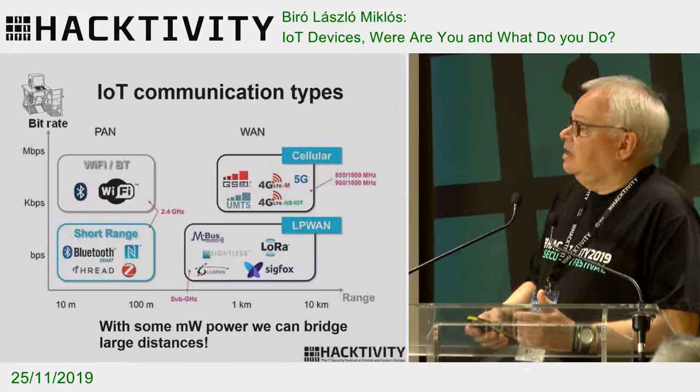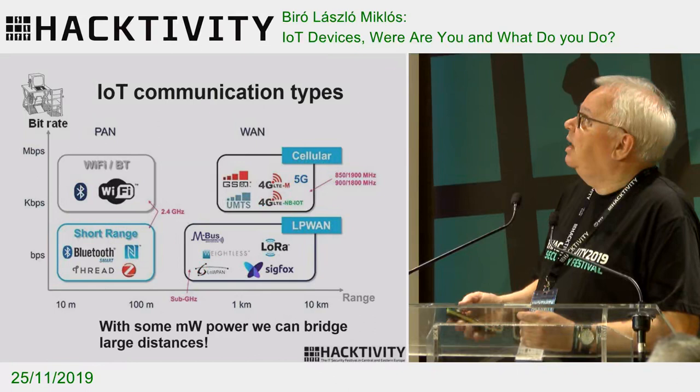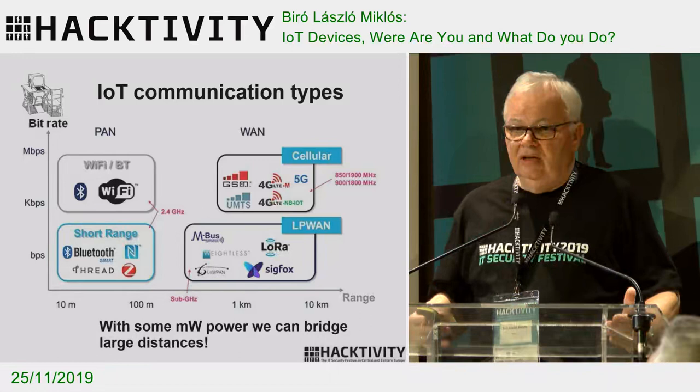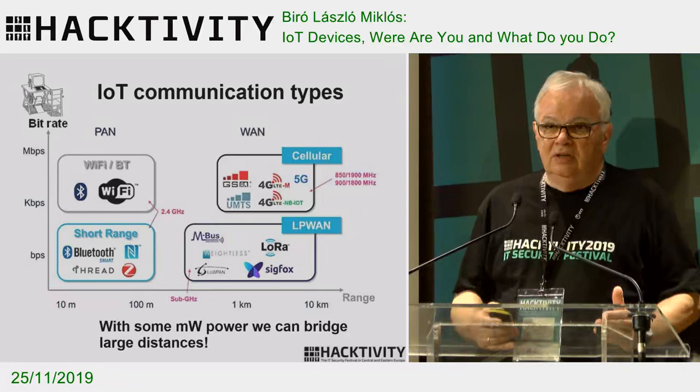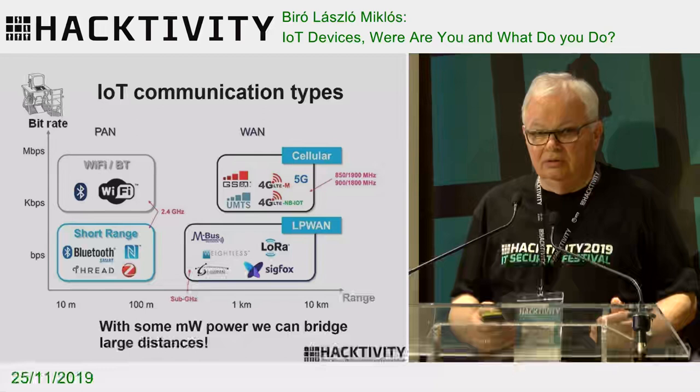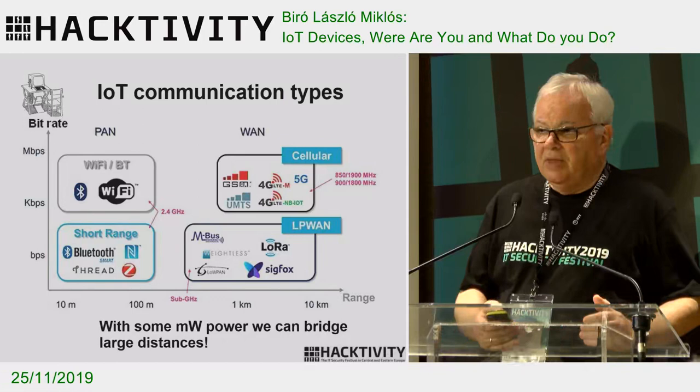There are several ways to communicate for an IoT device. It depends on the distance you need to reach and the data amount you want to transfer. The smaller the data amount and the smaller the distance, the lower power devices you need, and the less sophisticated devices and authentication required.